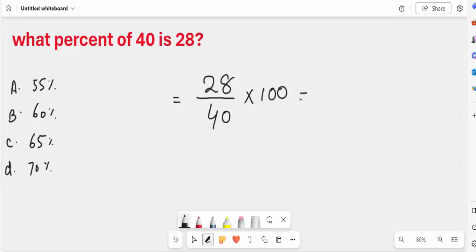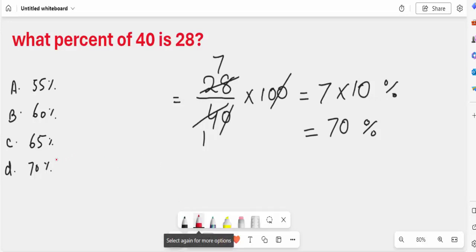Clear. Now this 0 cancels with this 0. 4 into 1 is 4, 7 times 4 is 28, 7 times 10. This is equal to 70. So this is a percentage because we multiply this number with 100, so this is in percent. So the answer is 70 percent.